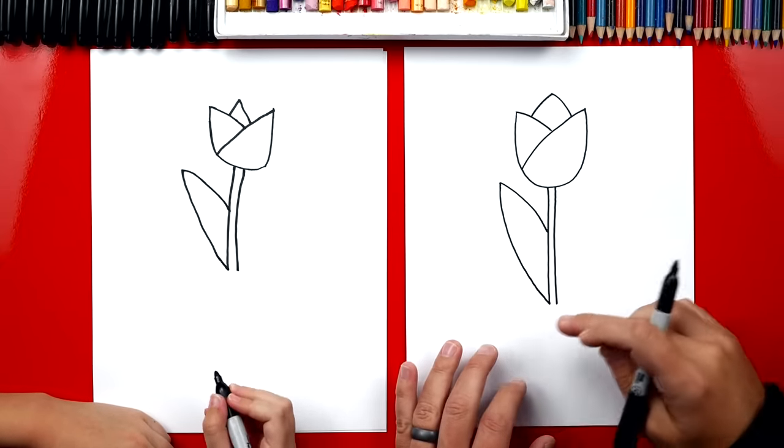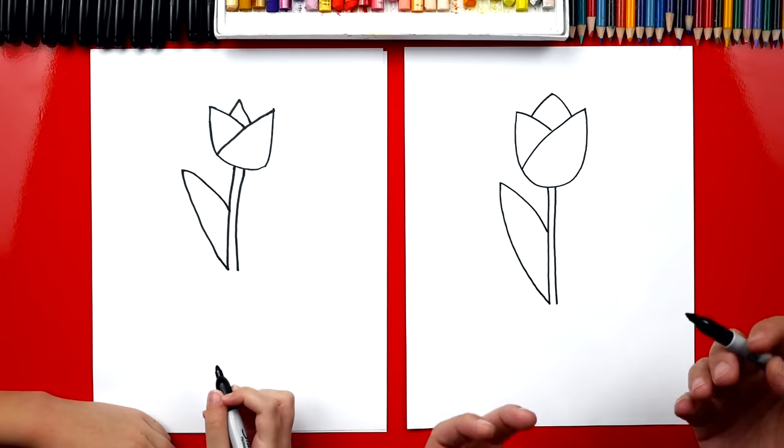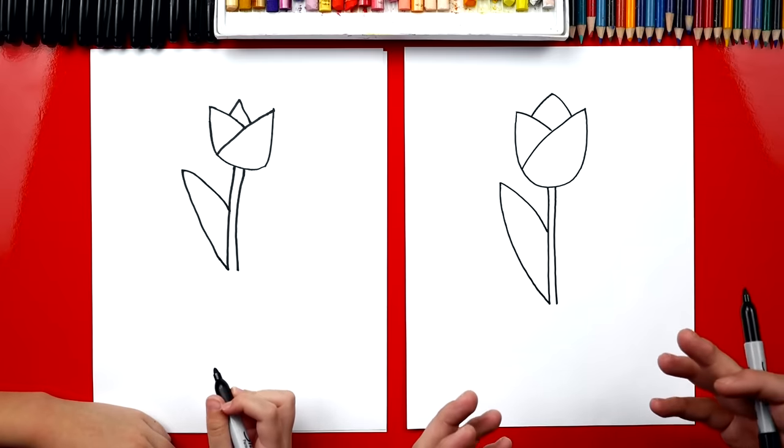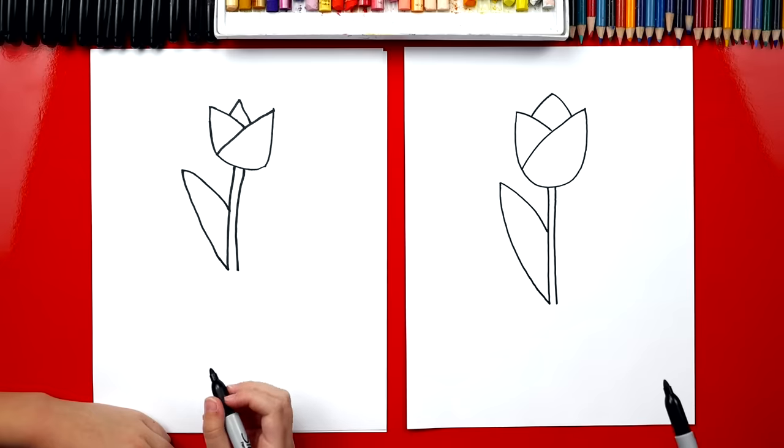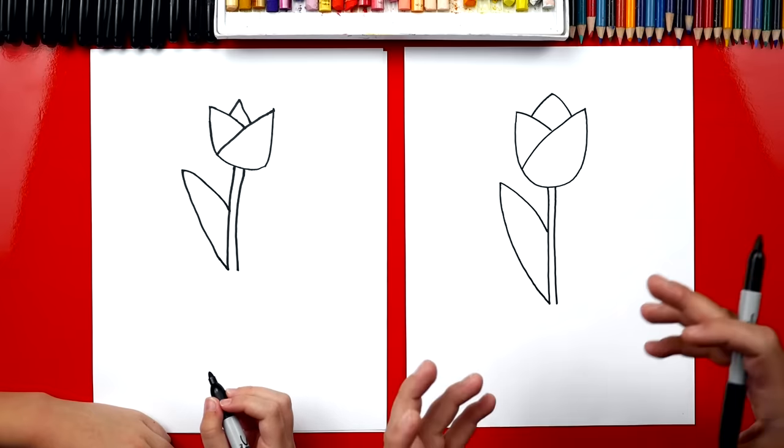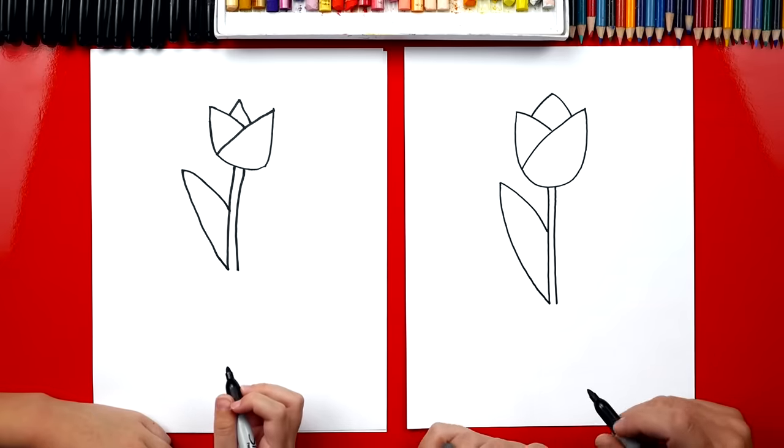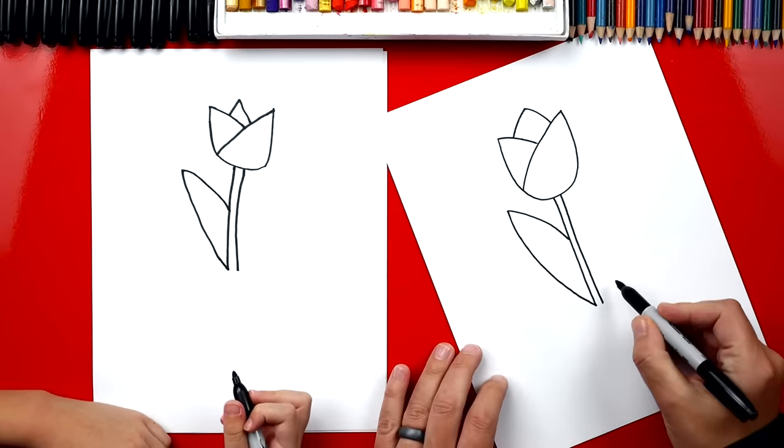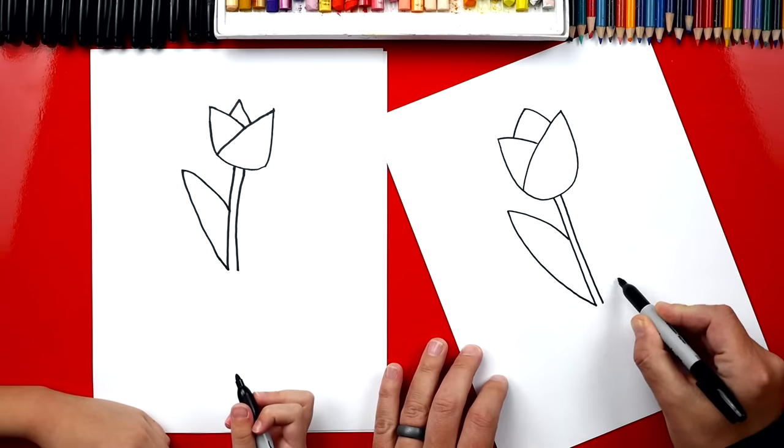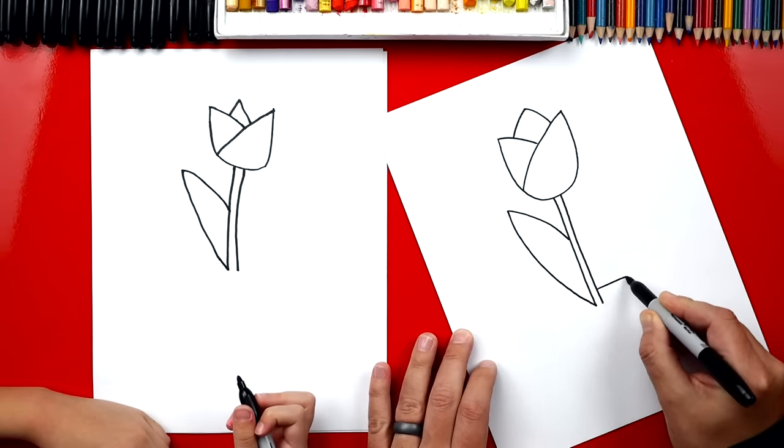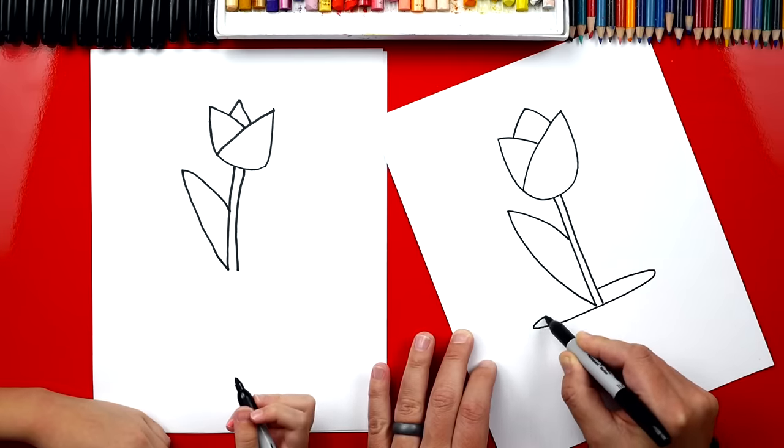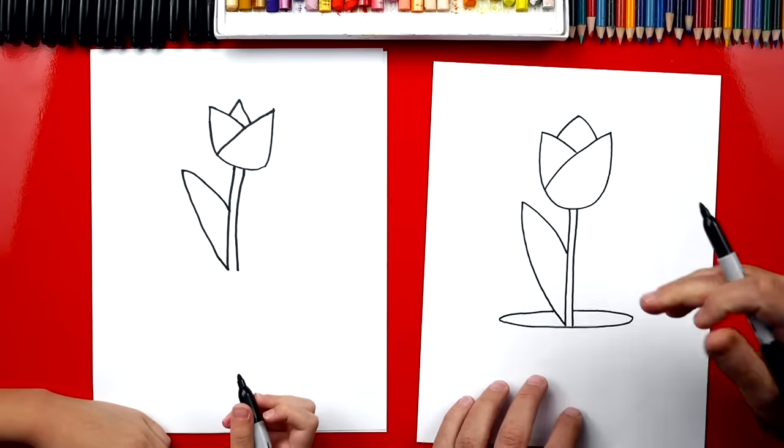Now we're gonna draw a pot because sometimes it's too cold to plant flowers outside around March 12th. So usually you can plant your flowers in a pot and then when it gets warmer, you can move the flowers outside. So let's draw a pot.